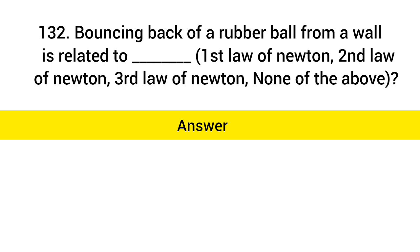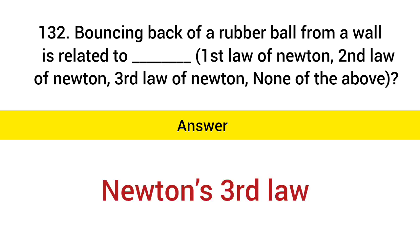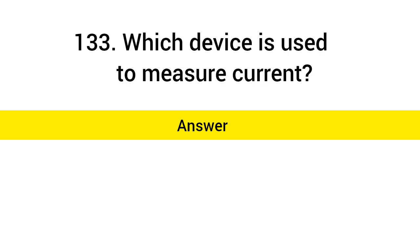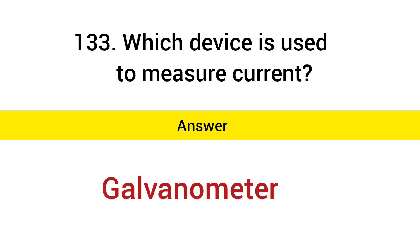Bouncing back of a rubber ball from a wall is related to which law of Newton? Answer: Newton's Third Law. Which device is used to measure current? Answer: Galvanometer.